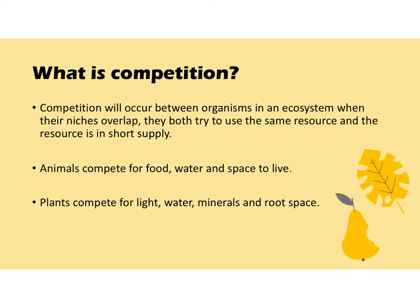So to start off, what is competition? Competition will occur between organisms in an ecosystem when their niches overlap — they both try to use the same resources and the resource is in short supply. Animals will compete for food, water, space to live, and mates. Plants will compete for light, water, minerals, and root space. When we talk about animals' space to live, we can say territory.